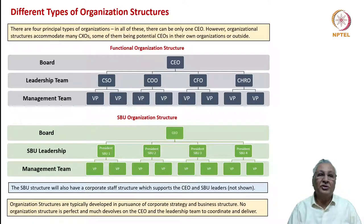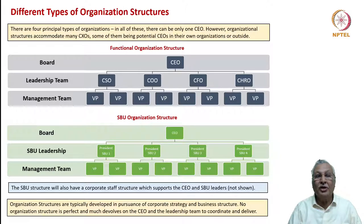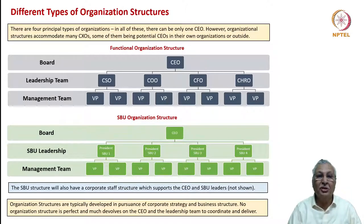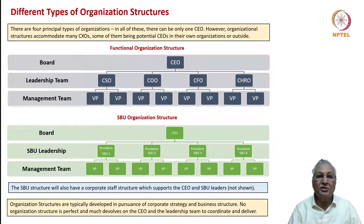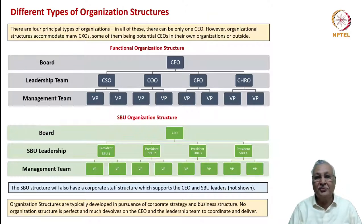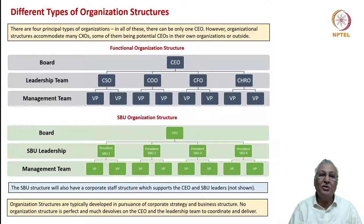There are different types of organization structures. The functional organization structure is the most common form, but we also have geographic, regional, product, and SBU organization structures. In a functional structure, the board is headed by the CEO and Managing Director, with a leadership team comprising Chief Scientific Officer, Chief Operating Officer, Chief Financial Officer, Chief Human Resource Officer, and similar CXOs reporting to the CEO.